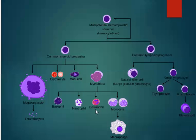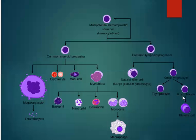The granulocytes are the 'phils': basophil, neutrophil, and eosinophil. The main two sections are myeloid and lymphoid. From the myeloid progenitors come megakaryocytes, erythrocytes, mast cells, and myeloblasts. From the lymphoid side we have NK cells and the smaller lymphocytes — T, B, and plasma cells. Remember that plasma cells come from B lymphocytes and give rise to antibodies.